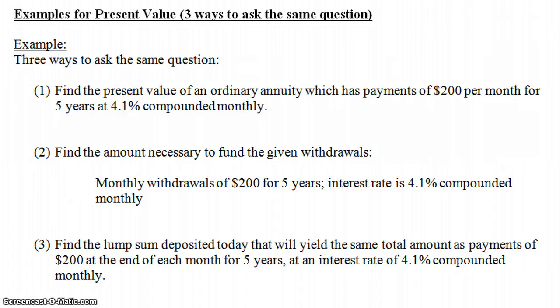You can think maybe you're setting up some retirement account or something. Now, you're putting in $200 a month for five years at a 4.1% interest rate compounded monthly. That money is going to grow over time, and you'll have some amount in the future five years from now. But really, what this problem is interested in is what is the present value of that annuity?